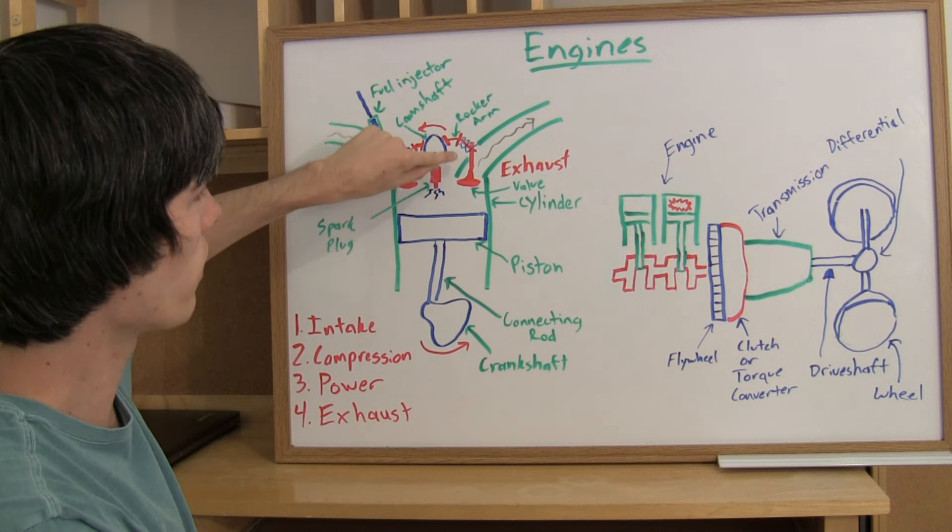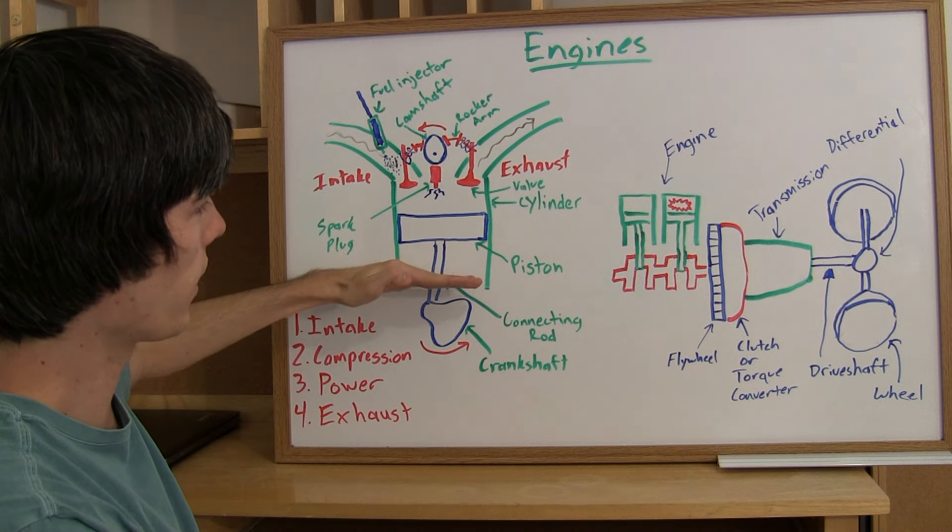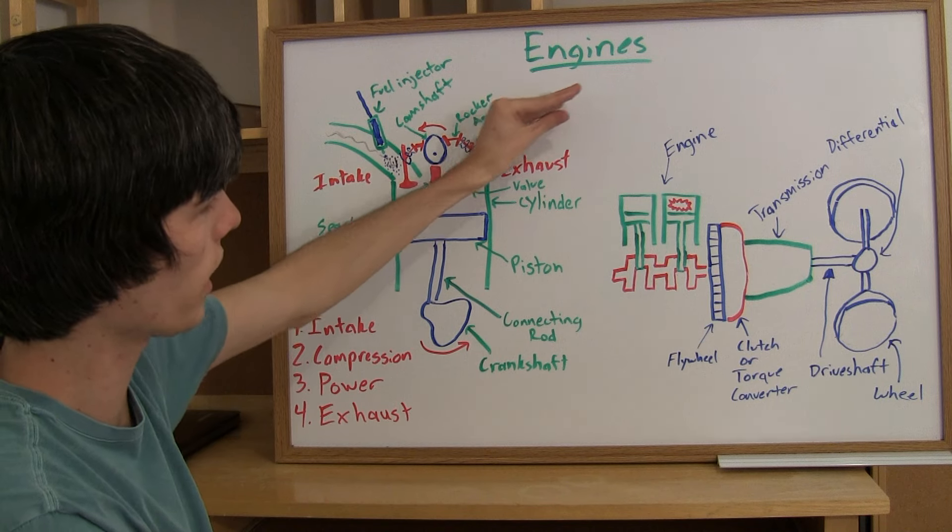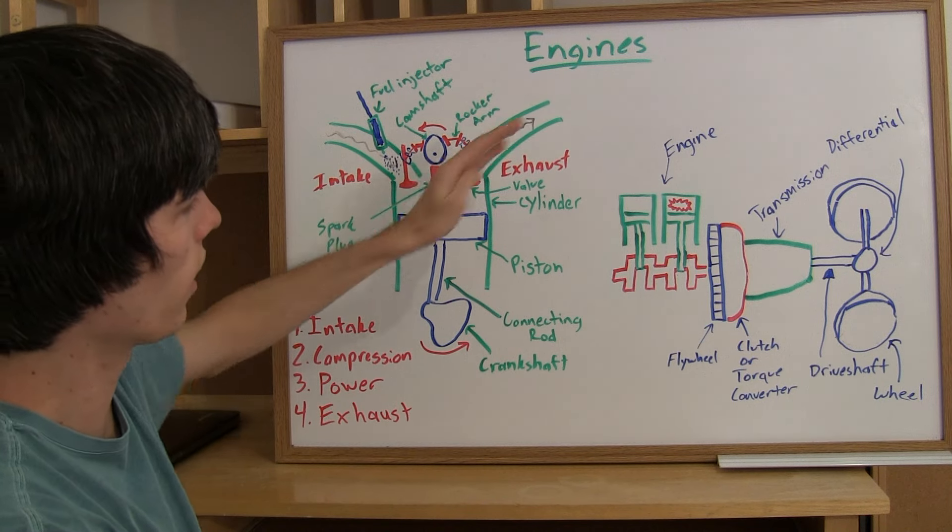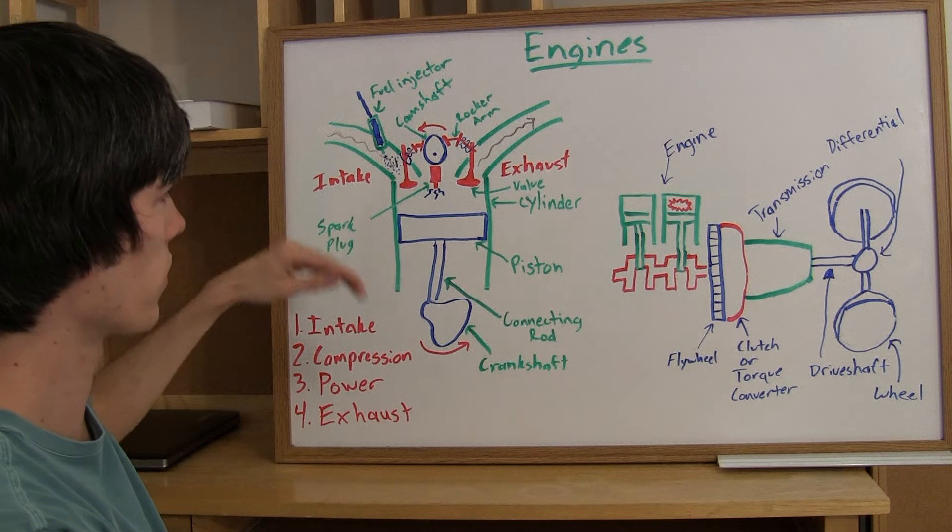So this camshaft here will rotate and push in this rocker arm. And so this will open up this valve. And as the cylinder, as the piston comes back up, it pushes out the exhaust gas out of the exhaust, the headers here. So that's the final step.